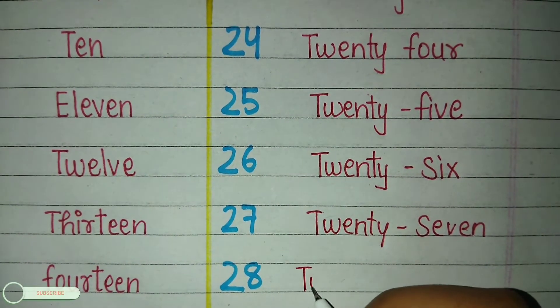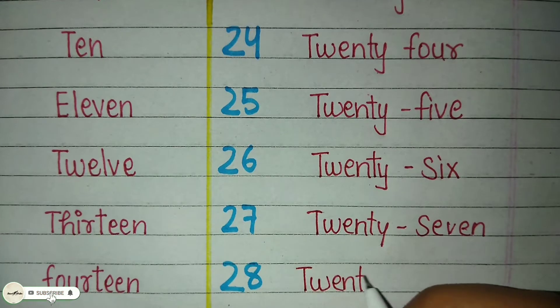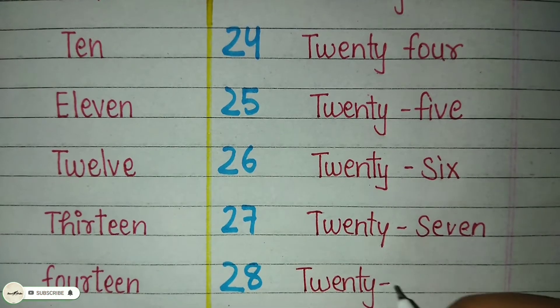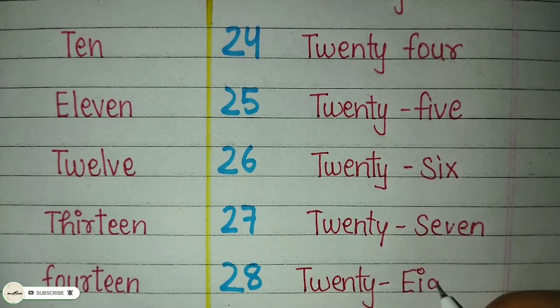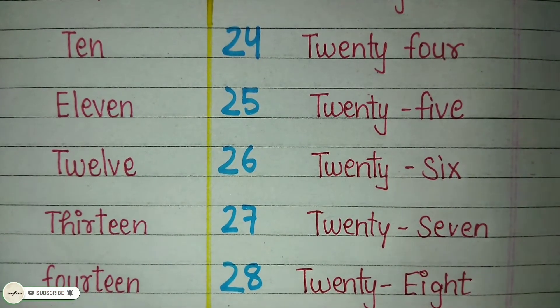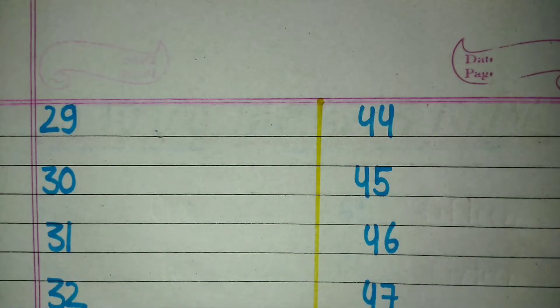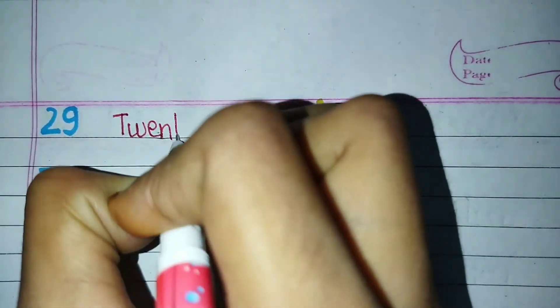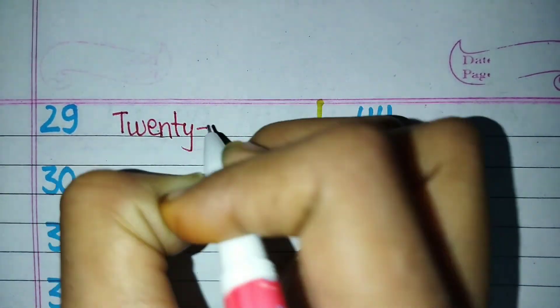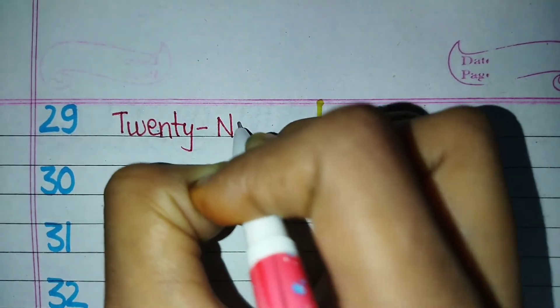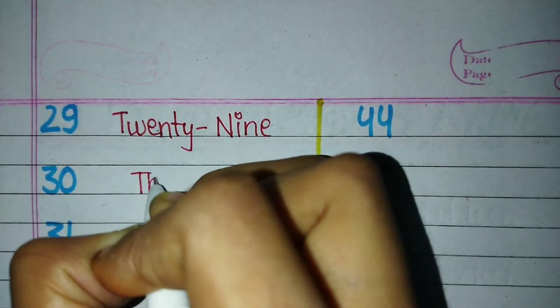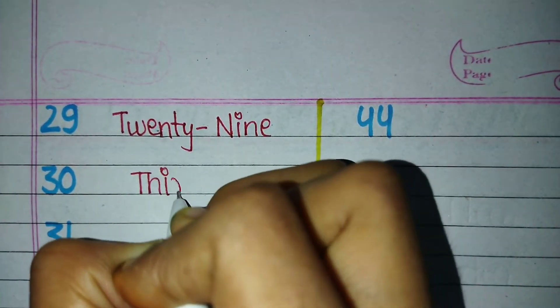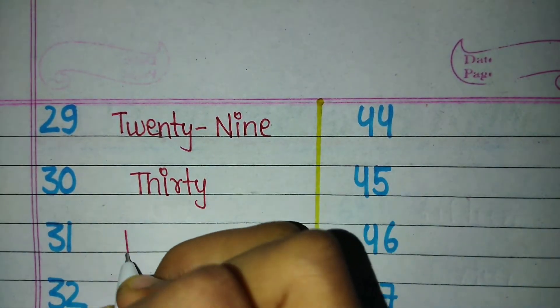Twenty-nine — T-W-E-N-T-Y — 20, N-I-N-E — 9 — 29. Thirty — T-H-I-R-T-Y — 30. Thirty-one — T-H-I-R-T-Y — 30, O-N-E — 1 — 31.